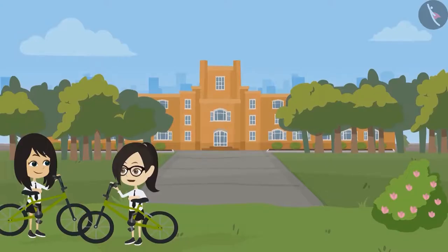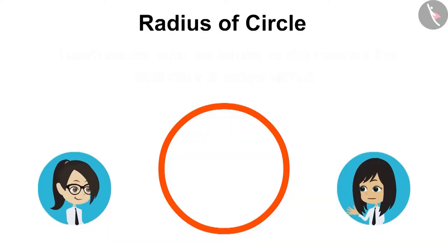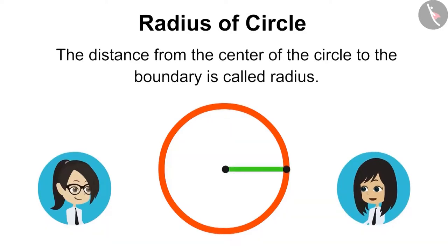Now remains the radius. You tell me about it. The distance from the center of the circle to the boundary is called radius.